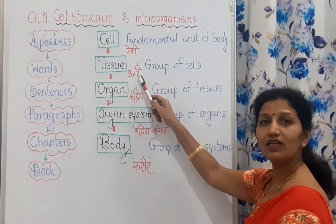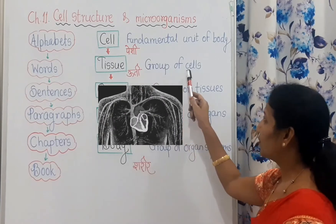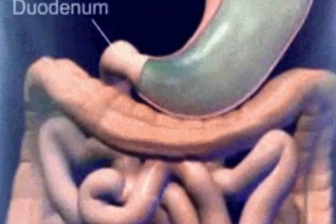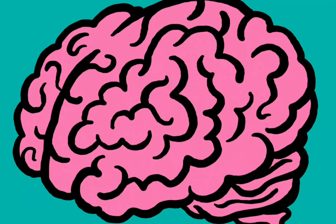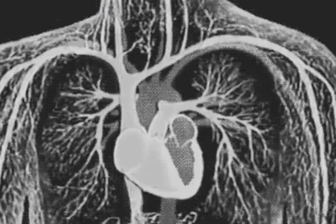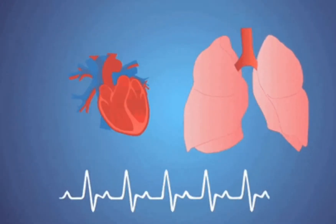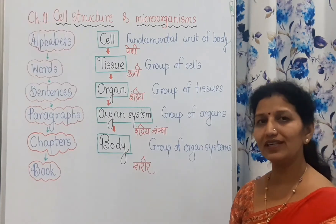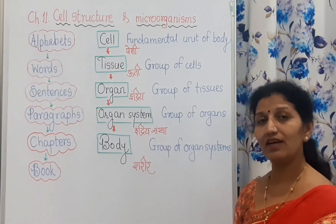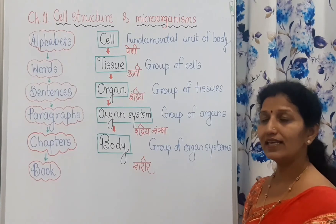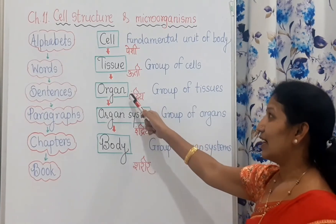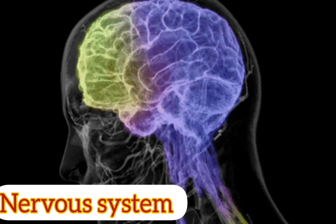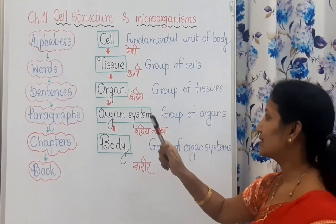A group of cells forms a tissue. In Marathi, tissue is called uti. Then a group of tissues comes together to form an organ. In our body there are many organs like the stomach, brain, heart, and lungs. These organs are formed from tissues, and tissues are formed from cells.